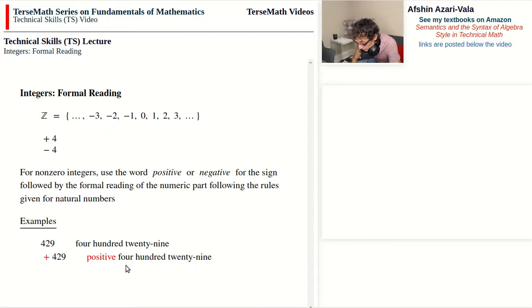And you notice that the writing of the number part is identical to what we had with the natural number 429. So all we did was to add the word positive to the reading of the number. And same thing on the negative side, we can read the next number as negative 429. The only change we have is to add the word negative to the reading of the number.